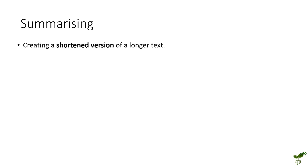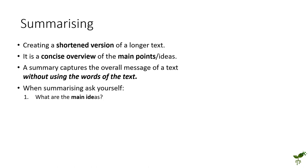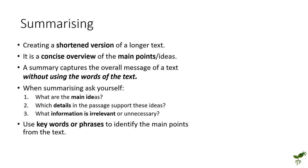Finally, summarizing is a technique used when you're creating a shorter version of a longer text. This is normally to give a concise overview of the main points or ideas without including broader details that are irrelevant. A summary captures the overall message of a text but doesn't use the words of the text — much like paraphrasing, it uses its own sentence structure and wording. When summarizing, ask yourself: What are the main ideas? What details in the passage are needed to support these ideas? What details are irrelevant for your specific purpose? Then try to use keywords or phrases to identify these as appropriately as possible.